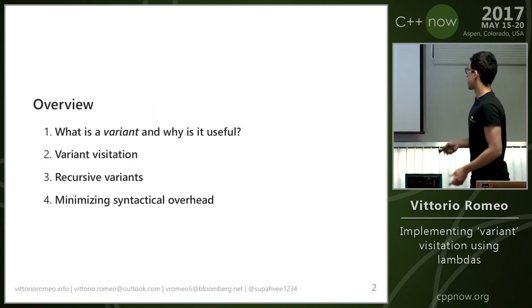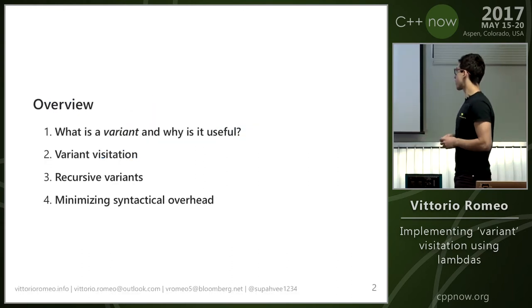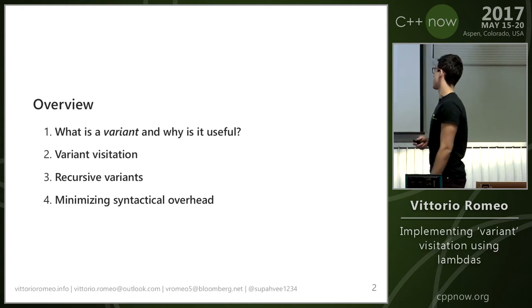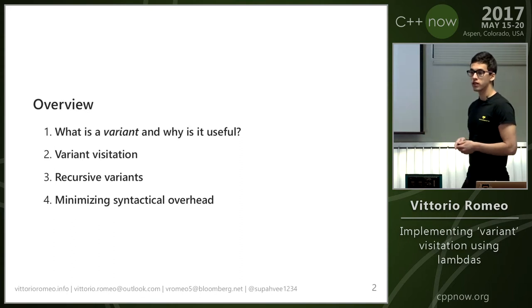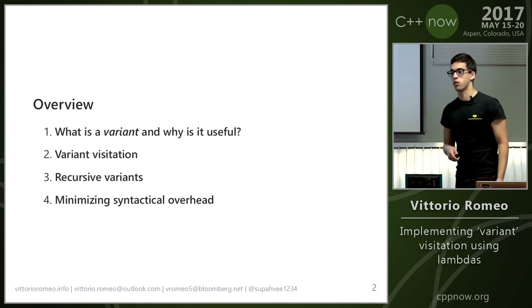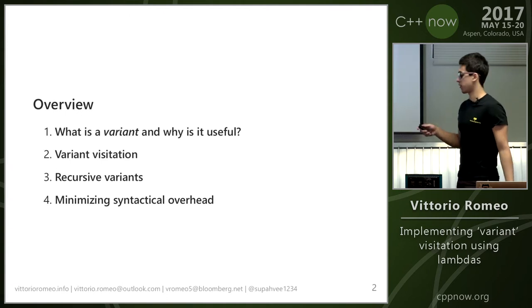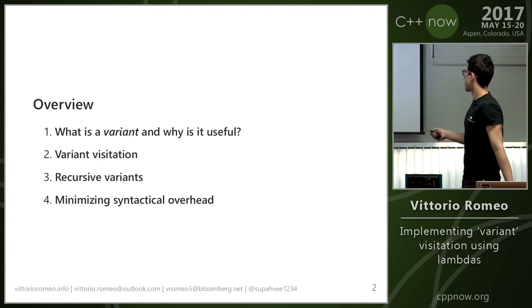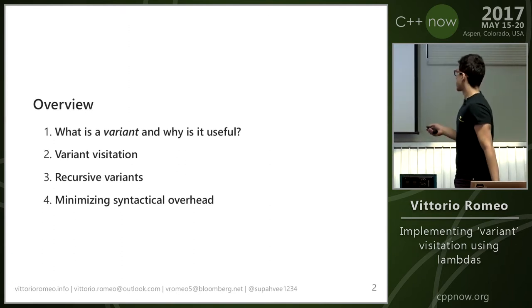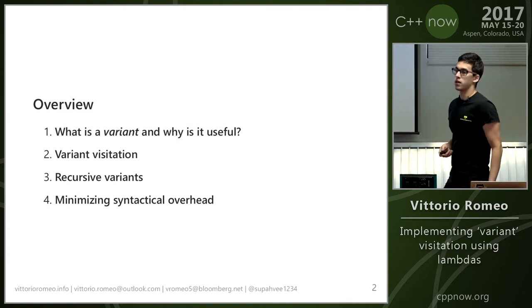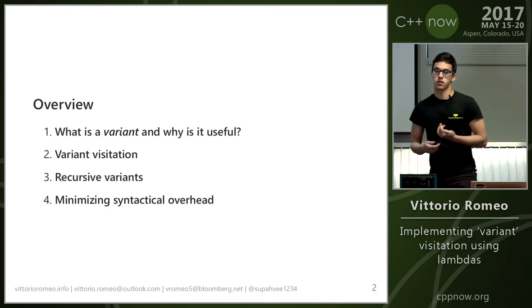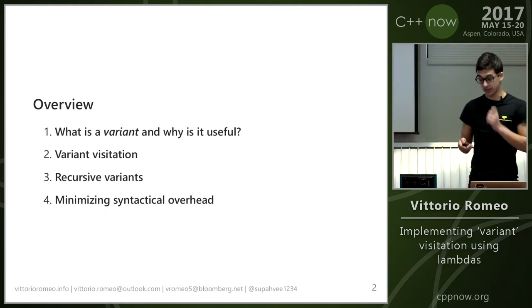This is a little bit of a choose-your-own-adventure talk. I have a lot of content that I want to cover, but depending on whether or not you're familiar with variant or overloading techniques, we can go a little bit faster or slower and see more interesting stuff at the end. The overview includes: what a variant is, variant visitation, recursive variants, and minimizing syntactical overhead — providing a user API which is really clean, and that's harder than it sounds.